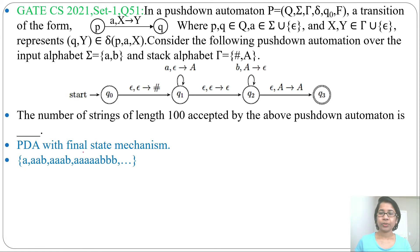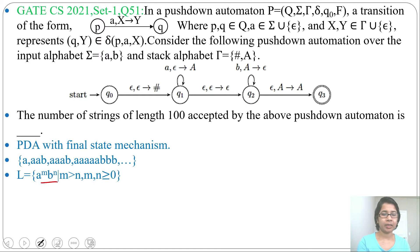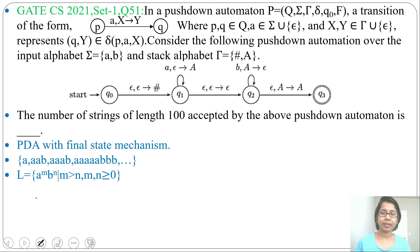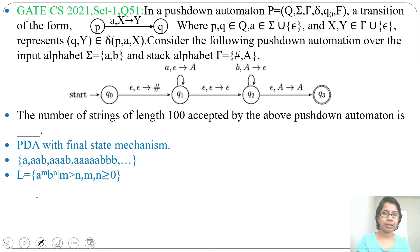So the language being accepted contains strings like a^2b, a^3b, a^5, a^3b, and so on. The language is: number of a's must be greater than number of b's — formally a^m b^n where m > n and m, n ≥ 0. It will accept any string where the number of a's is greater than the number of b's, and a's are followed by b's.